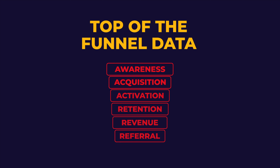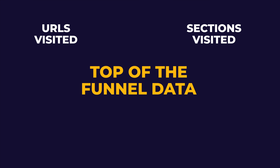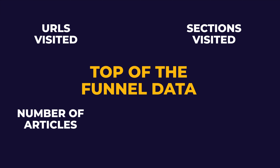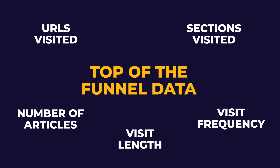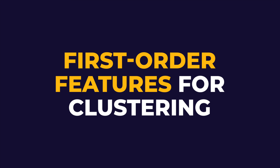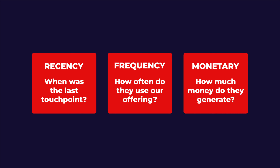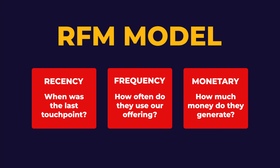We started with an example of survey data collected during onboarding, but you can do the same process with top-of-the-funnel data — for example, which URLs and sections they are visiting, how many blog articles they are reading, how frequently they are visiting, and for how long they stay on the website. You can also do the same thing with retained customers using a CRM database. For this, try to start collecting data from what we call the first-order features for clustering, which are recency, frequency, monetary value, and customer tenure. These come from the very classic marketing framework, the RFM model.